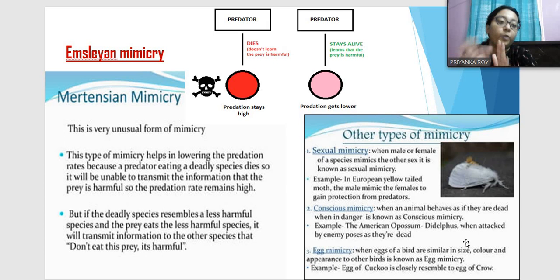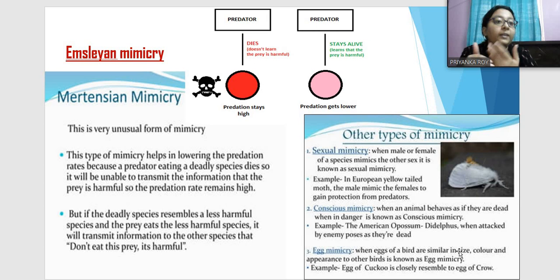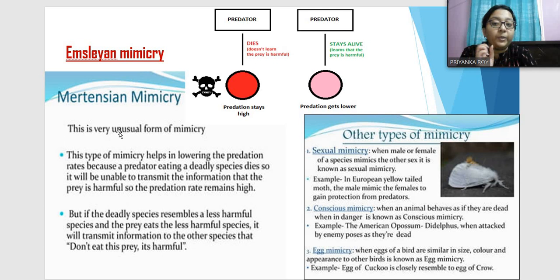Egg mimicry occurs when eggs of one bird are similar in size and appearance to another's. The cuckoo egg resembles the crow egg, and sometimes the cuckoo lays eggs in the nest of a crow. This means the cuckoo does not have to nurture the egg itself — someone else nurtures it and the young ones hatch from there.